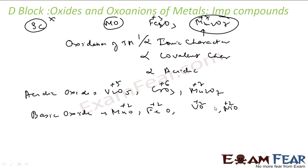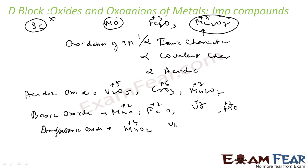For amphoteric oxides, the oxidation state is neither very high nor very low. Examples include MnO₂ (+4), VO₂ (+4), and CuO (+2). These are the ones which are amphoteric.